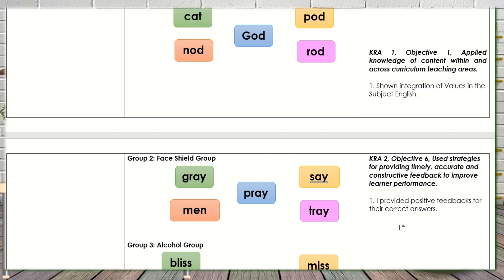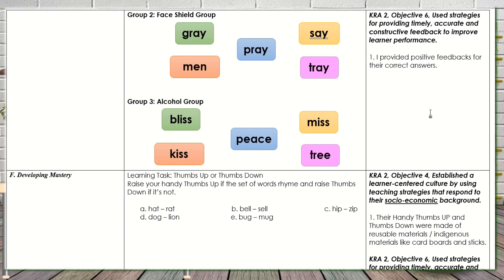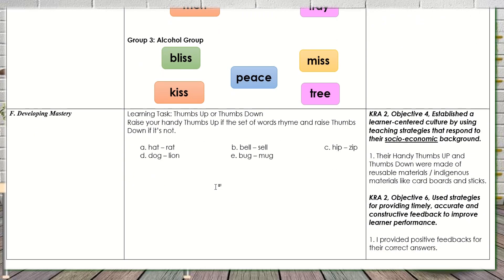I also touched CRA 2, Objective 6 again — giving accurate and constructive feedback to improve learner performance — which can be done individually or as a group. In Letter F — developing mastery — I gave learners a chance to make a handy thumbs up or thumbs down using recycled materials.